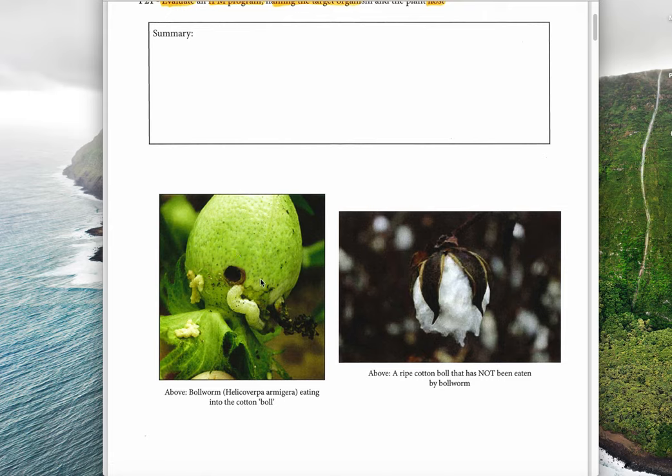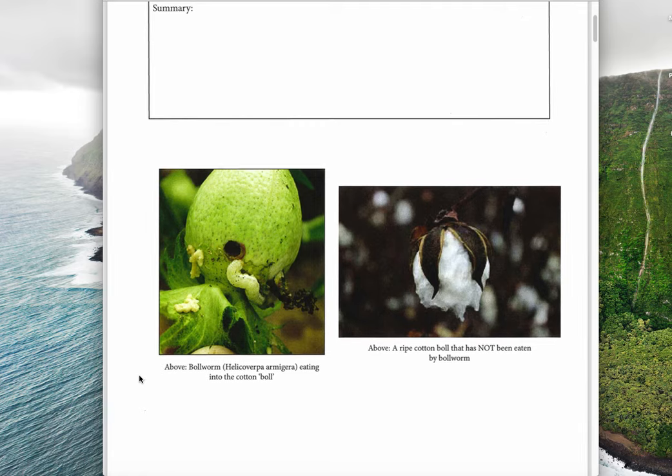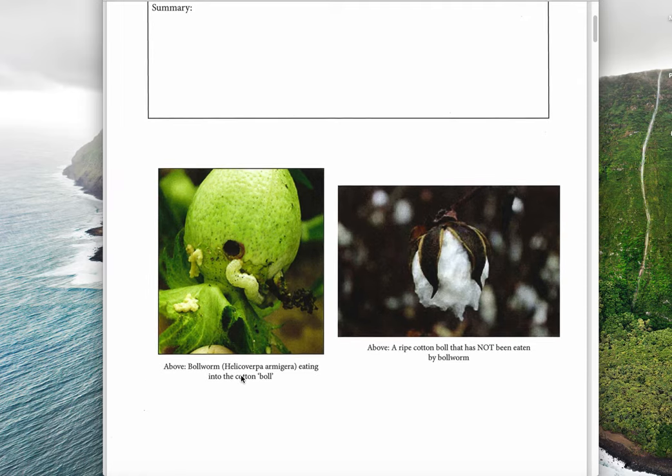Now that it's had a bollworm eat inside it, it's probably eaten out the cotton. So when this one ripens and opens up, there might be some but not much cotton left because it's been eaten. So bollworm is a major problem for cotton producers and needs to be controlled.